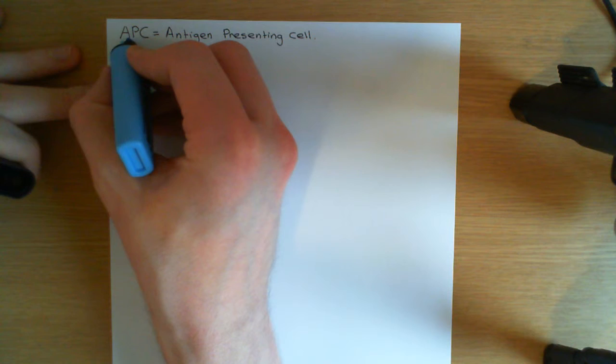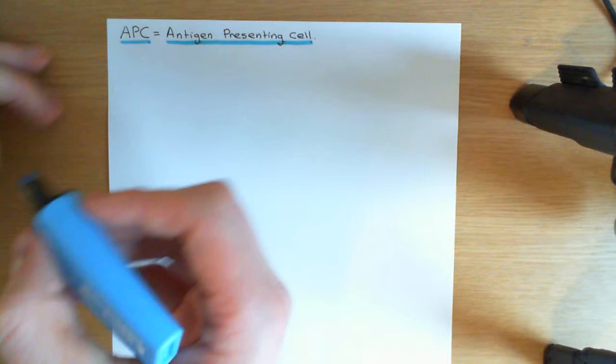The first concept we need to develop is the concept of an antigen presenting cell, often abbreviated to APC. These are cells that are actually capable of activating T cells, which are the major cells of the adaptive immune response. The two major types of antigen presenting cells are dendritic cells and macrophages. Dendritic cells are the absolute best antigen presenting cell; macrophages are less good at it but can certainly do it as well.